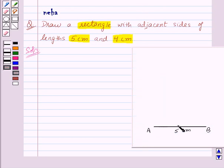All right. So here we have AB equal to 5 cm. Let us write steps of construction side by side.